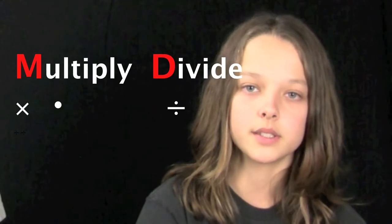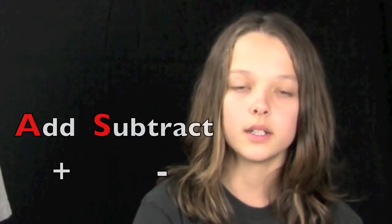The E stands for exponents and the MD stands for multiply and divide. The AS stands for add and subtract.